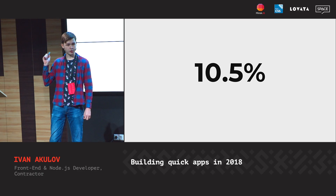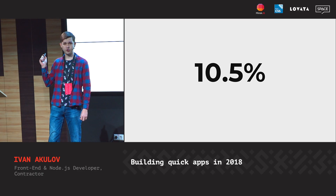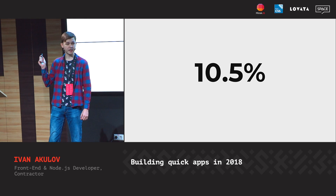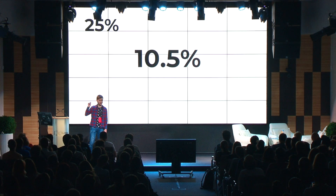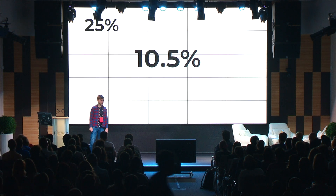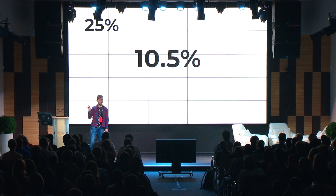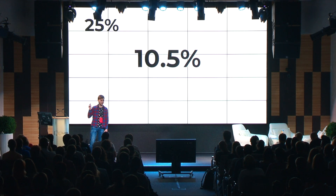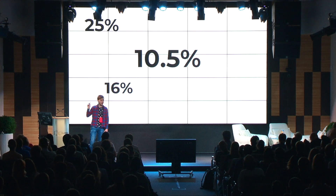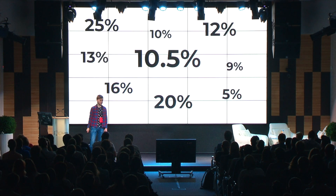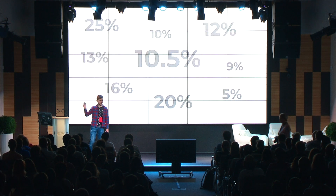Google tried slowing down their search by half a second, and users started making 25% fewer requests. A research group discovered that slowing a site down by a second decreases user satisfaction by 16%. There are lots of such numbers and lots of such studies.